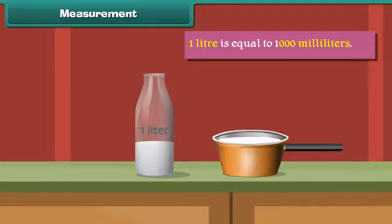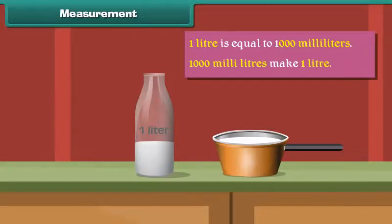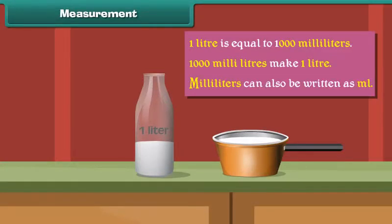One liter is equal to 1000 milliliters. This means 1000 milliliters make one liter. Milliliters can also be written as ml.